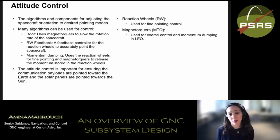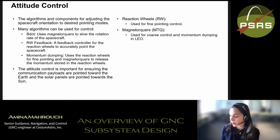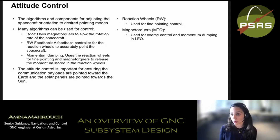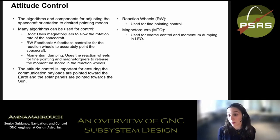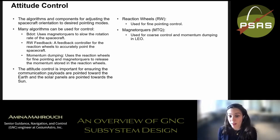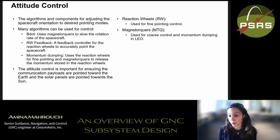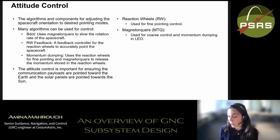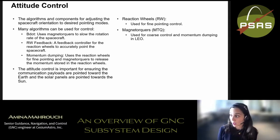Moving forward: reaction wheels are controlled using a closed-loop feedback control system that takes in the error between commanded and actual attitude estimation, then calculates a motor torque converted to whatever command the reaction wheel accepts — torque, speed, or current command. We change spacecraft orientation by applying this internal torque. Additionally, we use magnetorquers with a feedforward loop to continuously dump momentum by reading reaction wheel speeds and estimating the spacecraft's angular momentum.